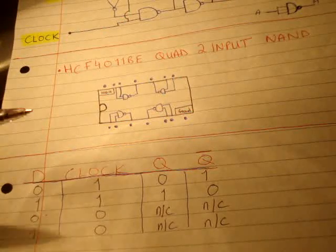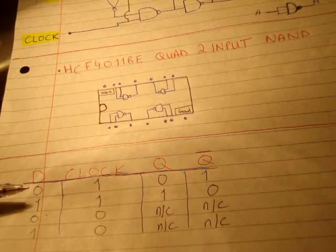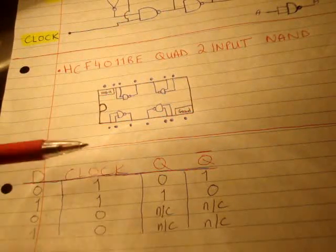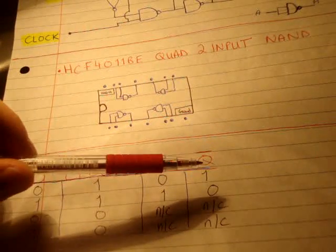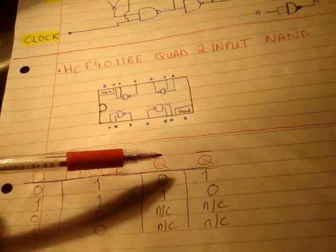Now remember that it will only do something when the clock is high. So if I have the clock high, the output Q will follow the input D. So when D is low, Q is low. When D is high, Q is high.